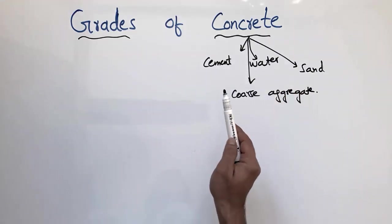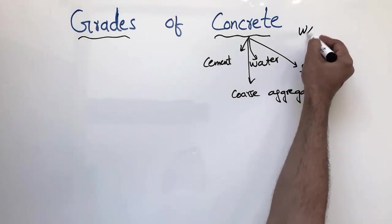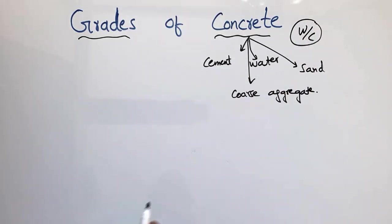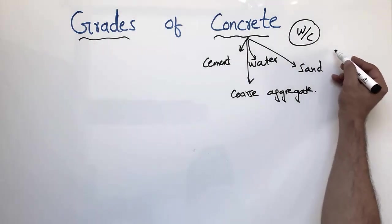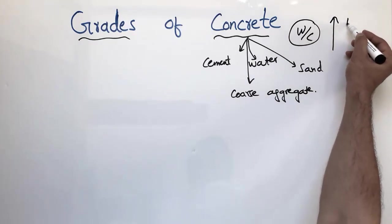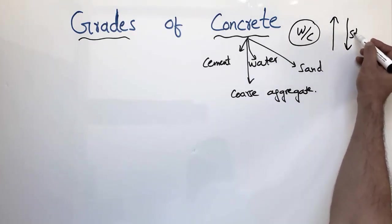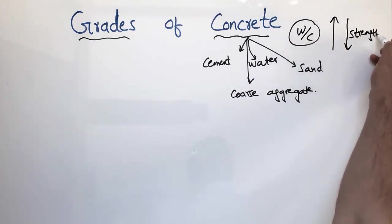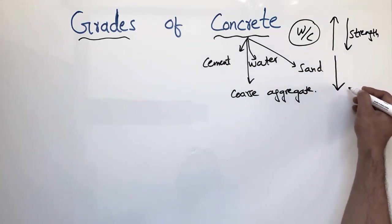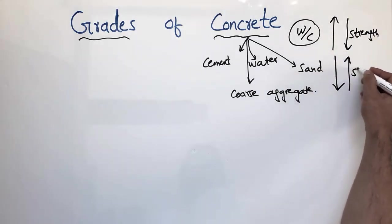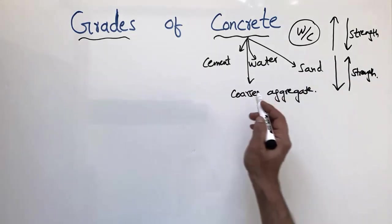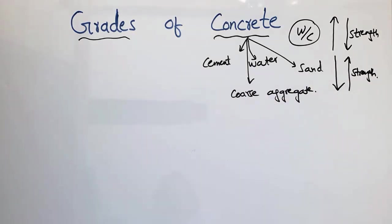The strength of concrete also depends on the water-to-cement ratio, which plays an important role. If you increase the water-cement ratio, the strength will decrease. When you decrease the water-cement ratio, the strength will increase. So this also plays an important role in defining the grades of concrete.